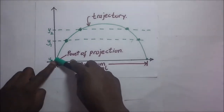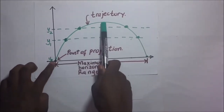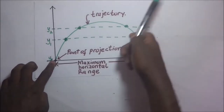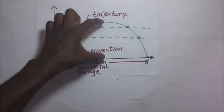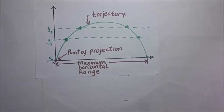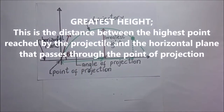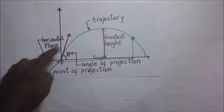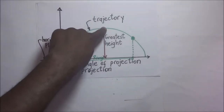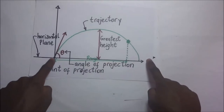When the ball is moving up, it will reach a certain maximum height beyond which it can no longer go up, and then gravitational forces will bring it back down. That maximum height is what we call the greatest height. By definition, the greatest height is the distance between the highest point reached by the projectile and the horizontal plane through the point of projection.